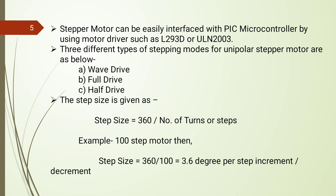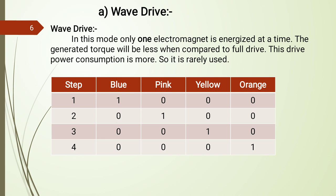The step size is calculated as 360 degrees divided by the number of steps. For example, if 100 steps are required for one full rotation, the step size is 360/100 = 3.6 degrees per step, meaning the shaft moves 3.6 degrees each time one step is incremented. In wave drive, only one electromagnet is energized at a time out of four windings.